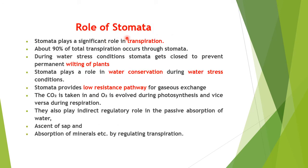Stomata plays a significant role in transpiration — about 90% of total transpiration occurs through stomata. During water stress conditions, stomata gets closed to prevent permanent wilting of plants. Stomata provides a low-resistance pathway for gaseous exchange, which is important for CO₂ intake and O₂ evolution during photosynthesis and respiration. They also play an indirect regulatory role in the passive absorption of water — the transpirational pull is responsible for the ascent of sap — and in absorption of minerals.